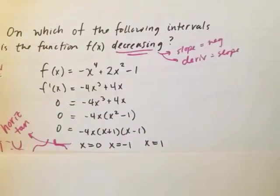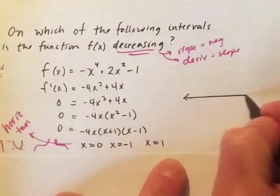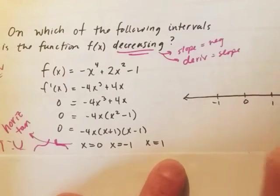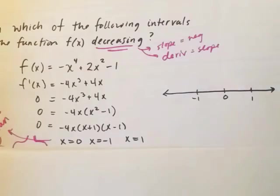So what we do is we look off to the side, we make our number line with those three numbers. Negative 1, 0, and 1. And remember that with this process, we know here the derivatives are going to be zero.